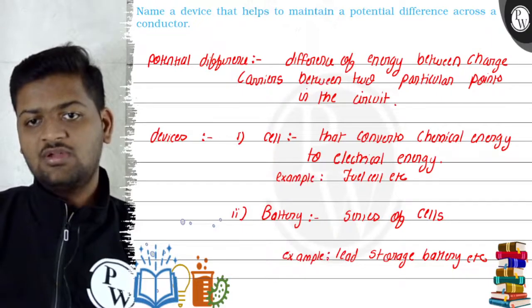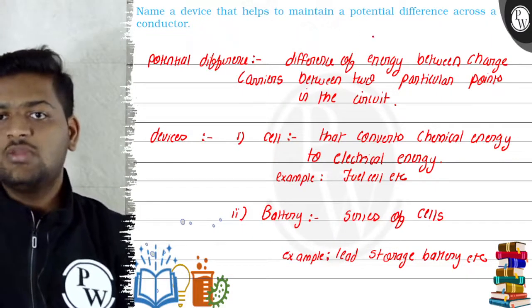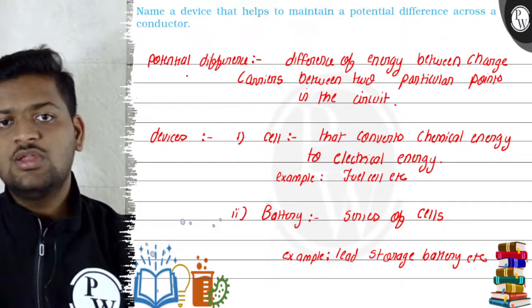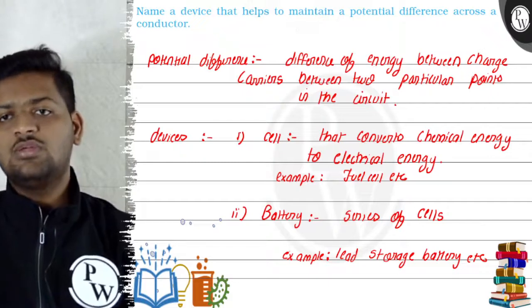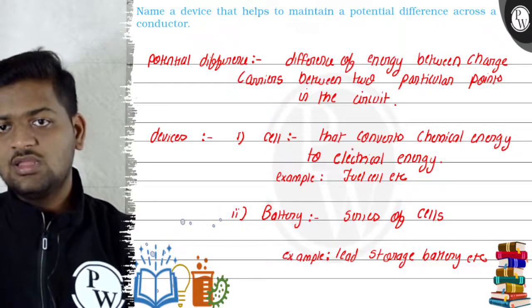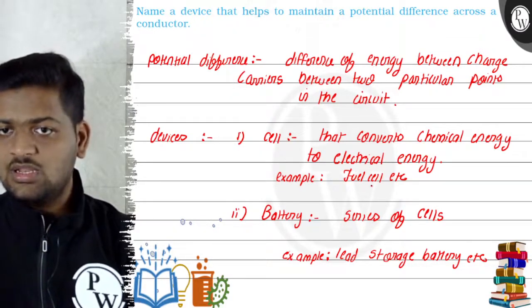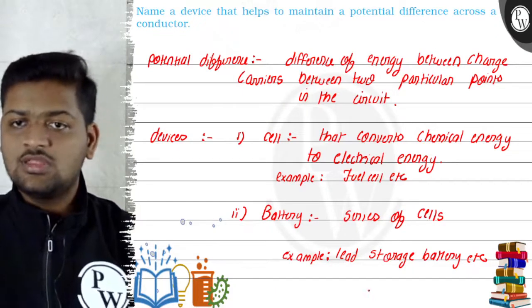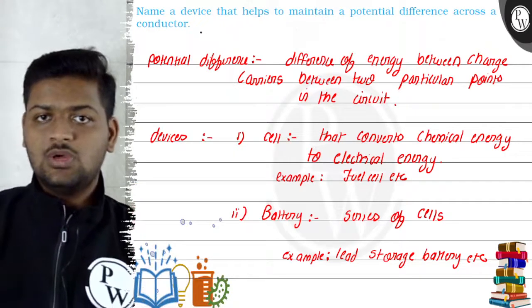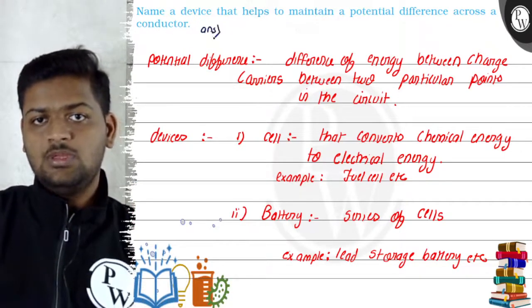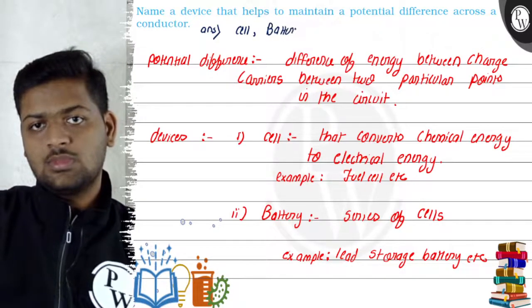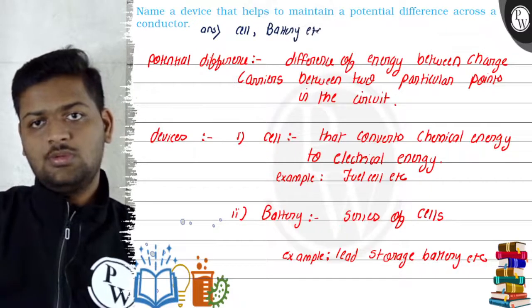So to summarize this question — name the device that helps to maintain potential difference across a conductor — potential difference is the difference of energy between charge carriers between two particular points in the circuit. The devices are: a cell, which converts chemical energy to electrical energy (example: fuel cell), and a battery, which is a series of cells (example: lead storage battery). So our answer is: cell and battery. Thank you.